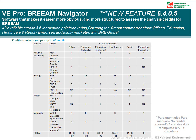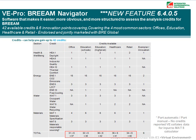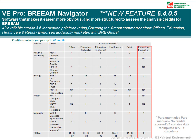In terms of the BREEAM 2008 Navigator, the sectors covered are Office, Education, Healthcare and Retail. This tool can help you gain up to 42 credits, and there are also six innovation points covered.